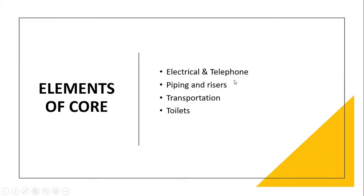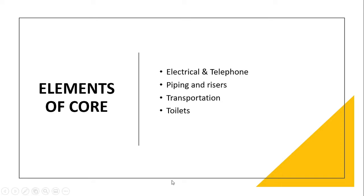Elements of the core include electrical and telephone systems, piping and risers — which are used for water distribution for drinking, washrooms, and firefighting systems, and also take service water down to the ground floor — transportation such as lifts, elevators and staircases, and toilet systems.